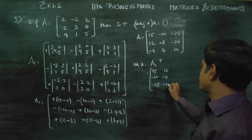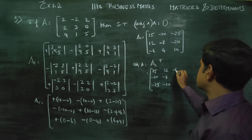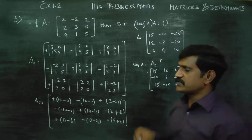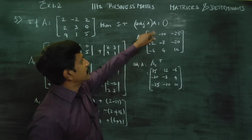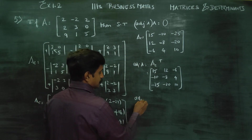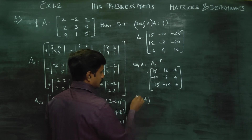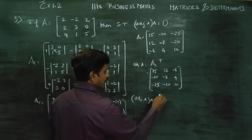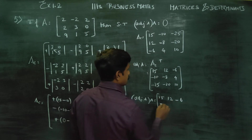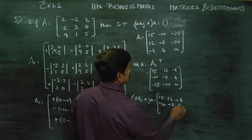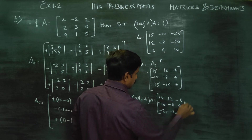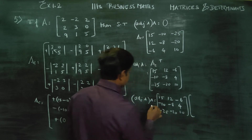This is called the adjoint matrix. After finishing this, I am going to multiply it. The adjoint matrix is ready to multiply. Last stage: adjoint A multiplied into the original A matrix.